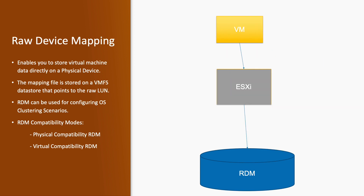Another type of data store is RDM, which stands for Raw Device Mapping. It enables you to store virtual machine files directly on a physical device. In a normal VMFS data store, capacity is assigned to the virtual machine in the form of a virtual disk, but that is not the case with RDM — it is directly attached to the virtual machine. The mapping file is stored on a VMFS data store that points to the raw LUN. The use case for RDM is clustering, such as MS clustering, where you need directly attached disks.